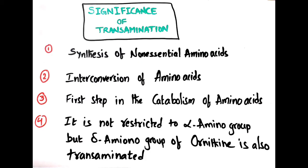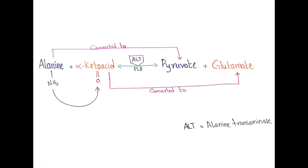Transamination is also involved in the interconversion of amino acids. Depending on cellular requirements, amino acids can be interconverted — for example, alanine and alpha-ketoglutaric acid can be converted into pyruvate plus glutamate, and glutamate plus pyruvate can be converted into alpha-keto acid and alanine.